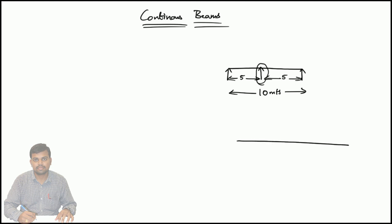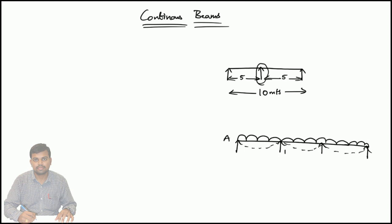If you consider a continuous beam carrying a UDL — uniformly distributed load — it produces certain deflection. Suppose this is support A, this is B, this is C, and this is D. These are the types of supports. If you consider the moments at the supports, at the ends it is equal to zero.